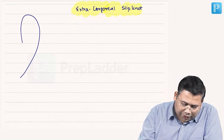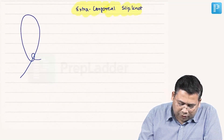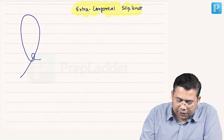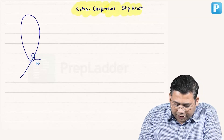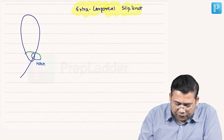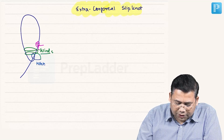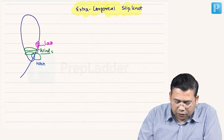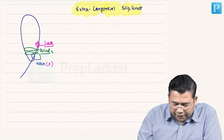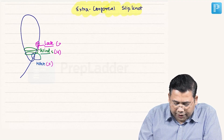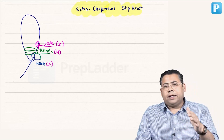Before you understand an extracorporeal knot, there are three parts. This is what is known as the hitch. Then we have the winds. And then we have the lock. These are the three parts of this knot — X, Y, and Z — which are combined to form a knot.